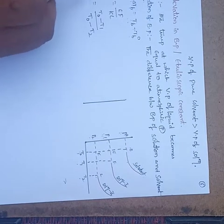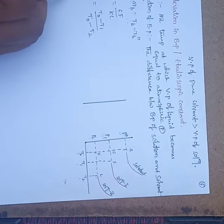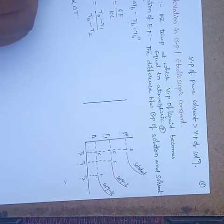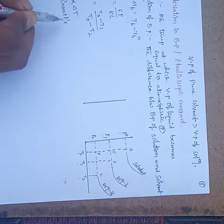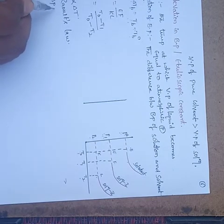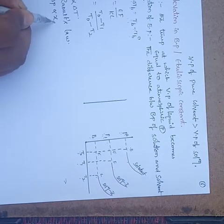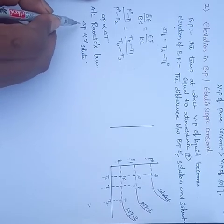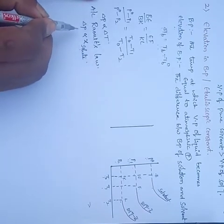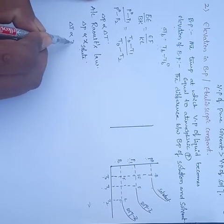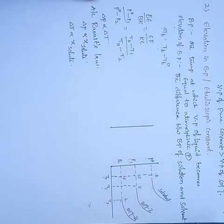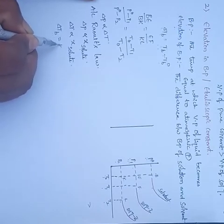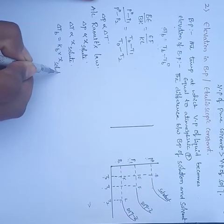Change in pressure is directly proportional to change in temperature. According to Raoult's law, relative lowering of vapor pressure is directly proportional to mole fraction of the solute. Similarly, delta T is also directly proportional to mole fraction of the solute. Removing the proportionality gives: delta Tb equals Kb times mole fraction of the solute.